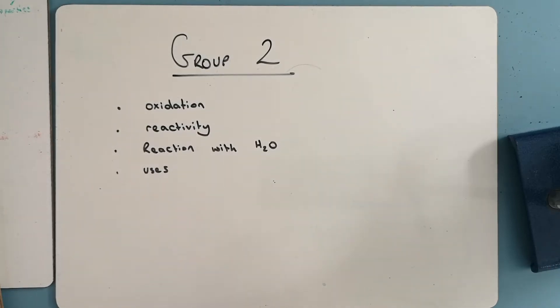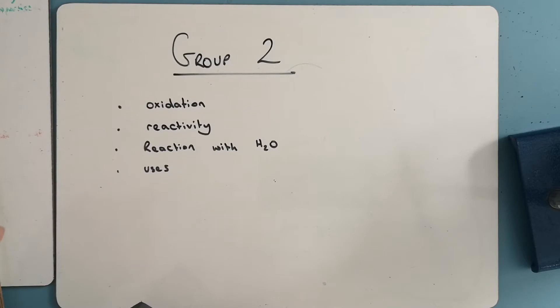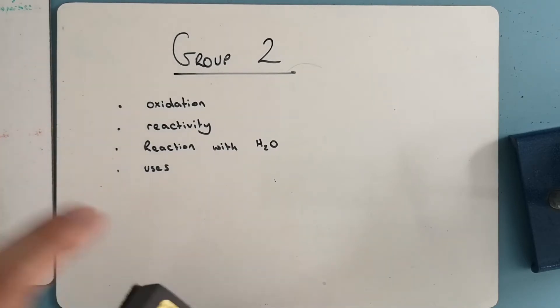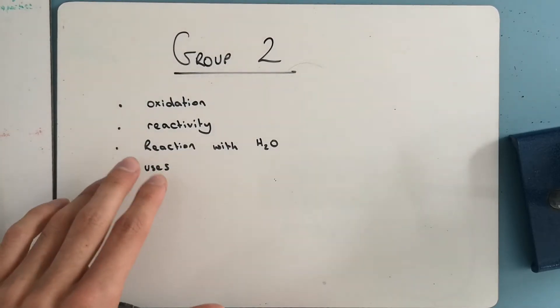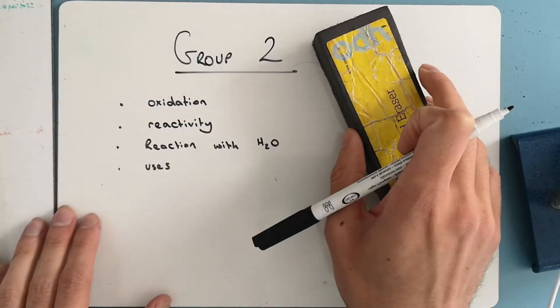Hi, this video is going to look at group 2 from the OCR A-level chemistry specification. We'll look at the oxidation they undergo, the general reactivity and the trend down the group, how their oxides react with water, and some uses as well. These are taken straight from the spec.